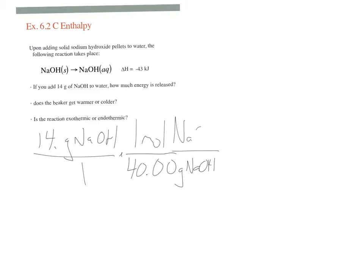We know the molar mass is 40, and now with the equation, we know that for every one mole of NaOH, we get negative 43 kilojoules.